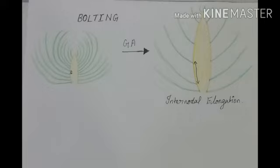In the next video, we can see about the remaining two phytohormones, that is abscisic acid and ethylene. For more videos, please subscribe to our channel.